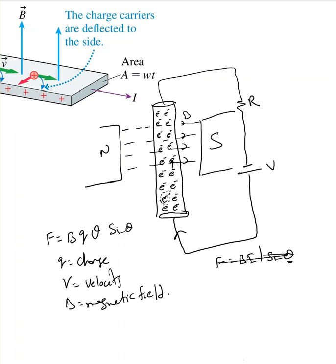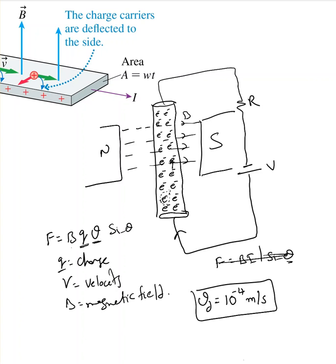These electrons have a charge Q, and they move with a velocity called drift velocity. That velocity is very small — about 10⁻⁴ meters per second. The electron is moving in one direction with a charge, so using F = BQV, all these electrons are going to experience a force.